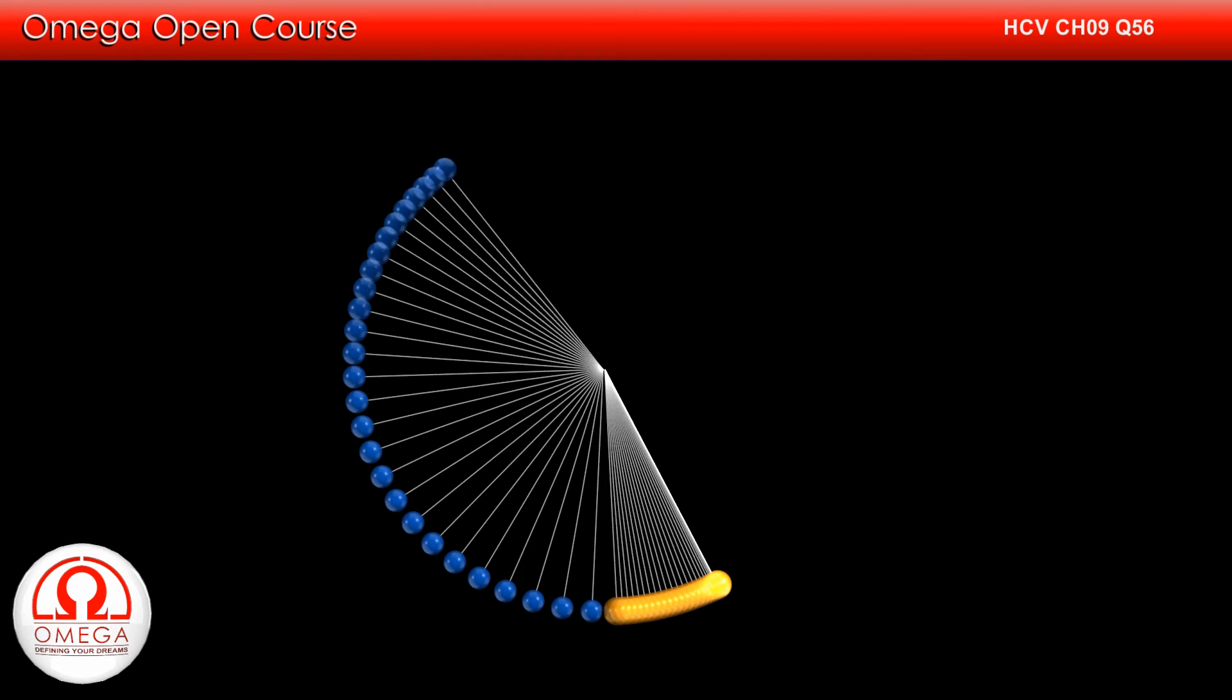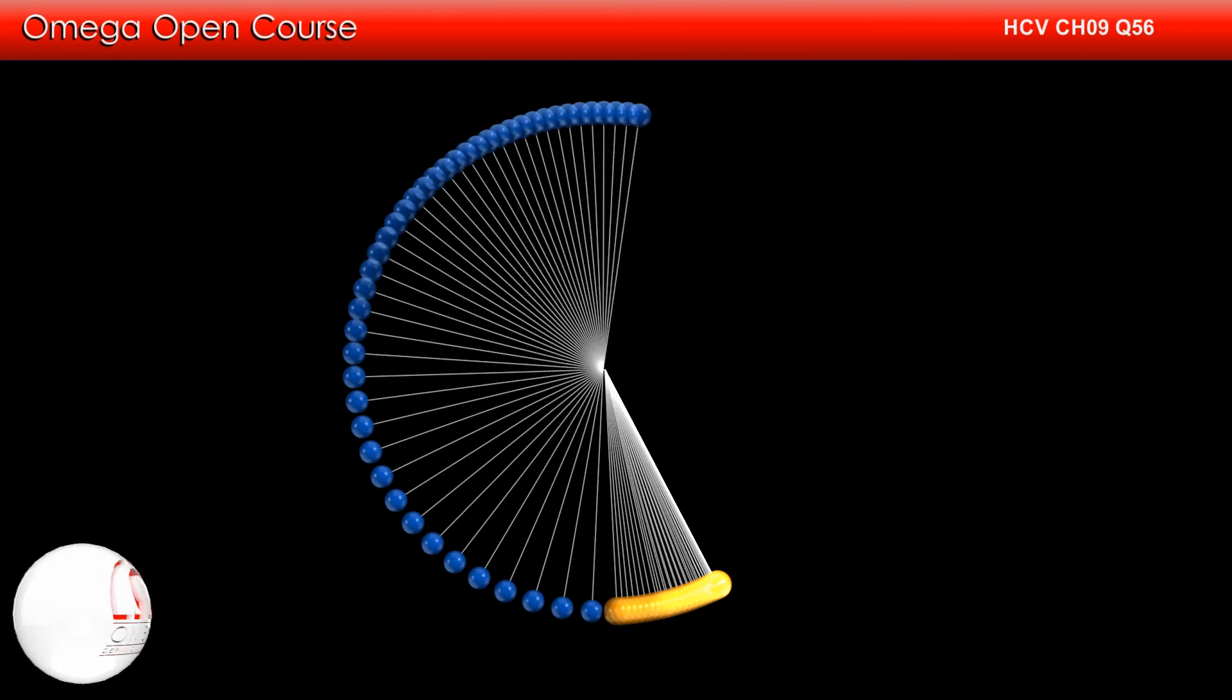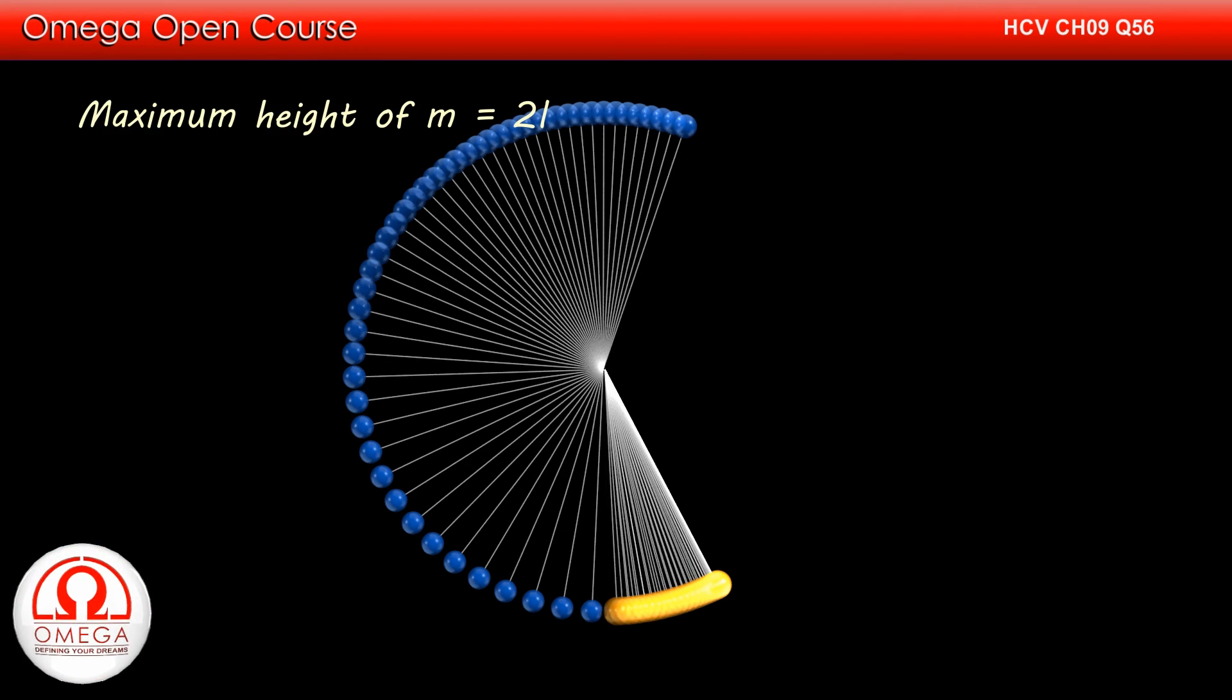We know that for a bob to complete a vertical circle, it needs a minimum of root 5gl speed at its lowest point. Since the speed of the lighter particle is more than root 5gl at its lowest position, it completes the vertical circle. Therefore, its maximum height is 2L.